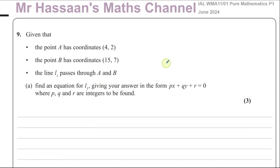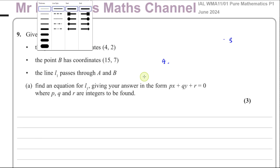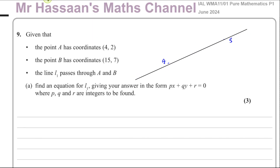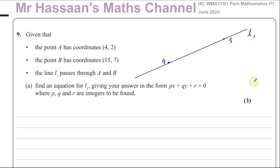So we have two points A and B, and there's a line that passes through both of these points — that line is called line L1. We want to find the equation of this line. To find the equation of a straight line, we need two pieces of information: one, we need to know the gradient of the line, and two, we need to know any point on the line.